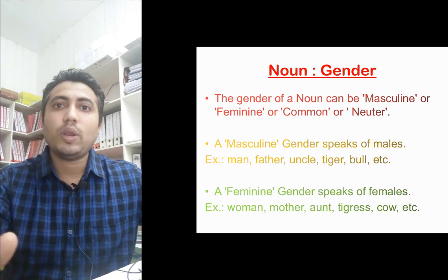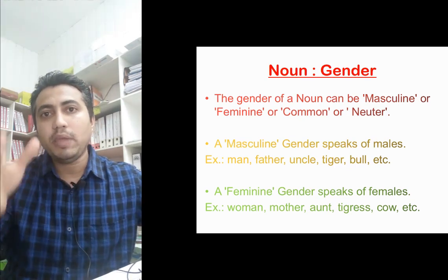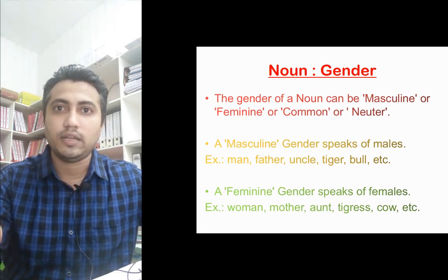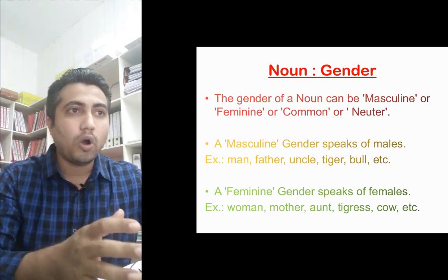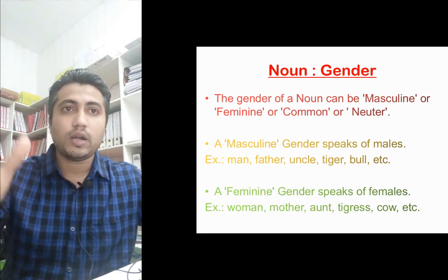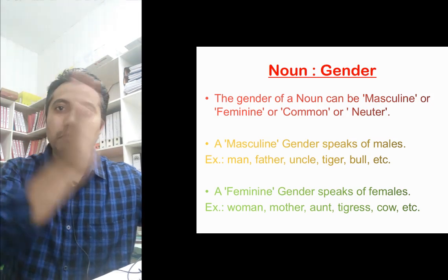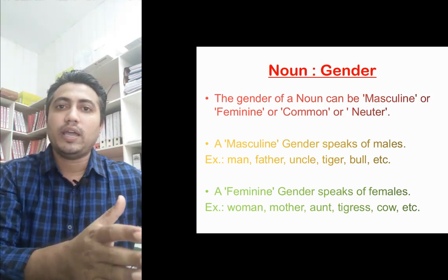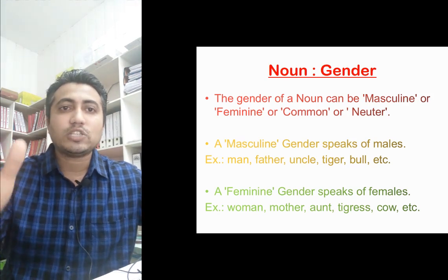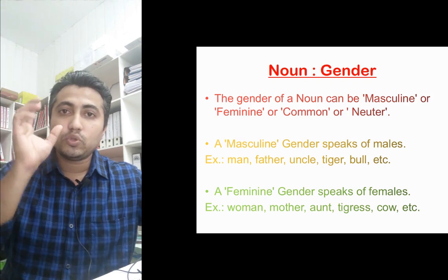The first one is masculine gender. Masculine gender means a noun that belongs to the male category. For example, it can be a boy, a man, an uncle, tiger, bull, etc. All these belong to the male category and that is why they are called masculine gender.